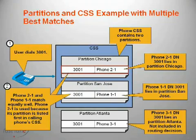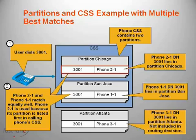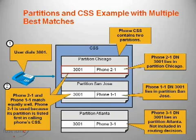Here we can see that directory number 3001 exists three times in the dial plan: in partition Chicago pointing at phone 2-1, in partition San Jose pointing at phone 1-1, and in partition Atlanta pointing at phone 3-1. When the phone dials 3001, it will match the phone in Chicago because Chicago appears first in the calling search space above San Jose. It will not take Atlanta into consideration because the Atlanta partition is not in the phone's calling search space.